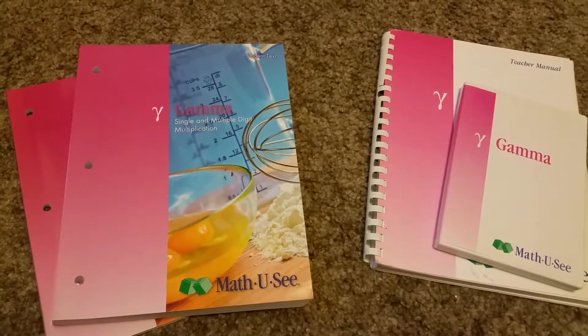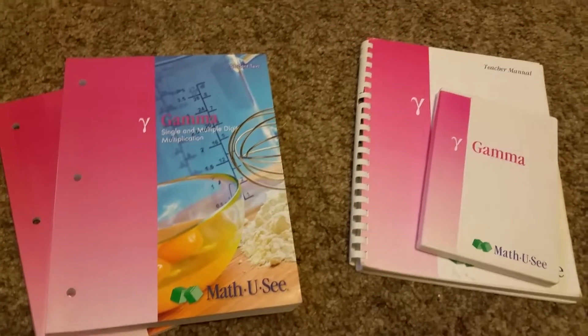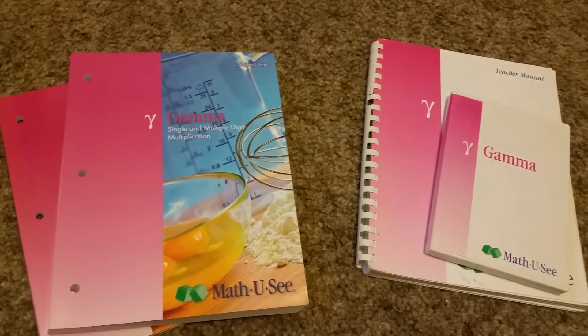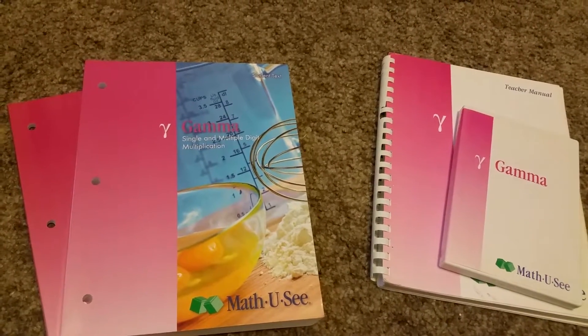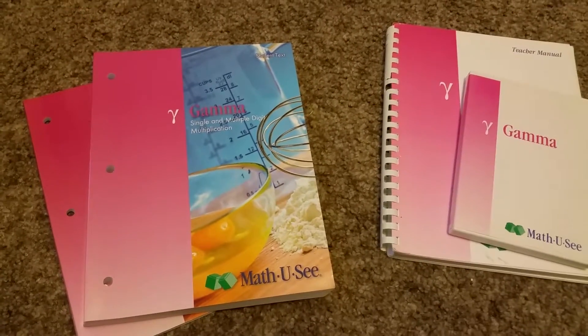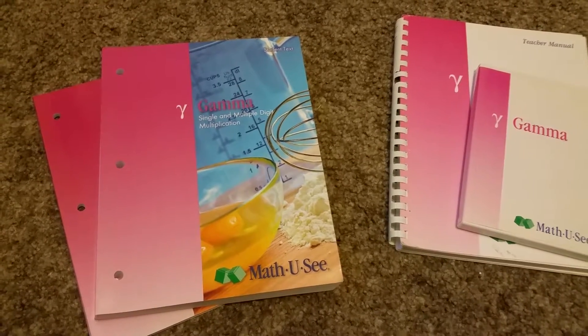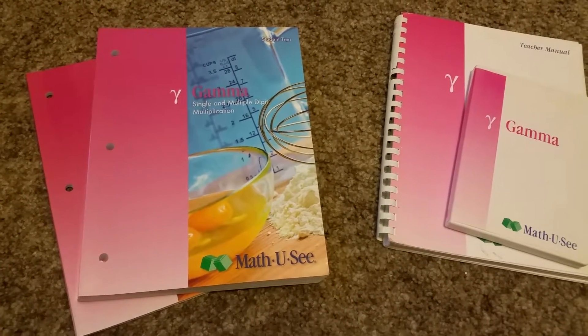Alright, Math-U-See Gamma is the next one after Beta. It's basically primer is kindergarten, Alpha is first, Beta is second, and so Gamma is third. They don't do grade levels because they don't want to place the kids. Some people are ahead or behind in math, and they just go with your skill level, not your age or grade level.